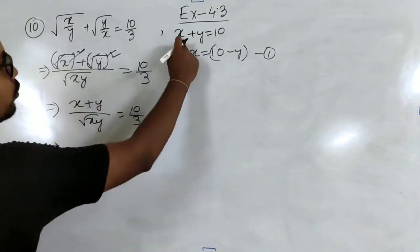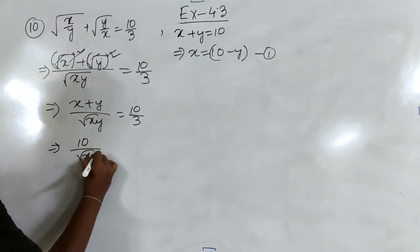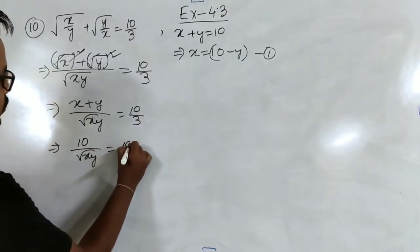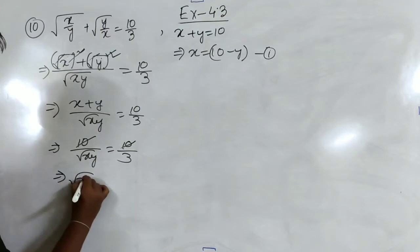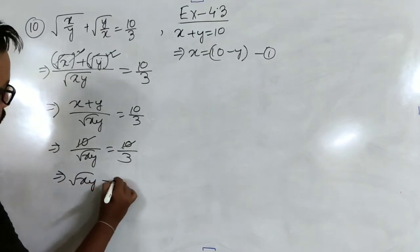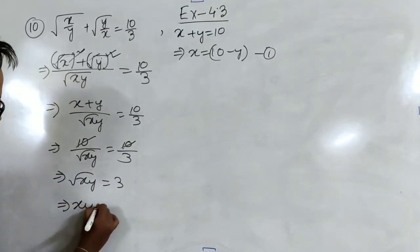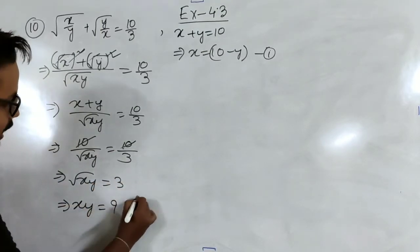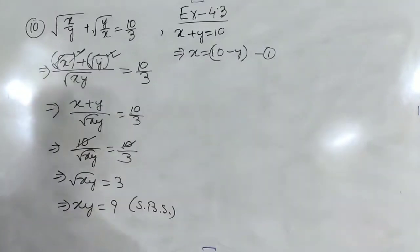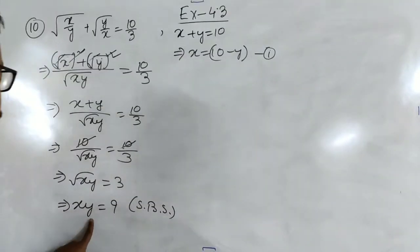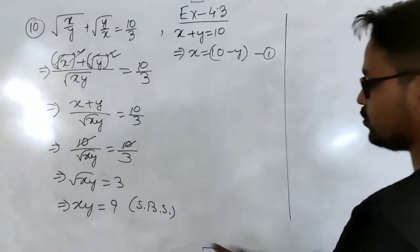Since x plus y equals 10, we get 10 by root(xy) equal to 10 by 3. The 10s cancel, giving root(xy) equal to 3. Squaring both sides, xy equals 9. Now we use x equal to 10 minus y in xy equal to 9.